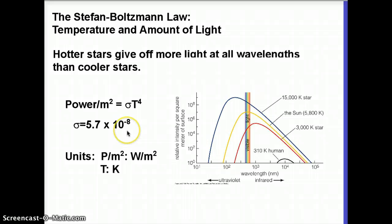This constant has a value of 5.7 times 10 to the negative eighth. It's named the Stefan Boltzmann constant for Mr. Stefan, who was one of the people who came up with this. And that's the Greek letter sigma. It looks like an O with a little horizontal thing off the top of it. The units for this one will be pretty straightforward. We'll have watts per square meter for the power per square meter, and the temperature will need to be in Kelvin again.